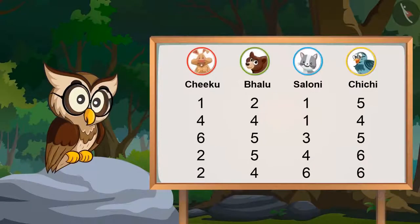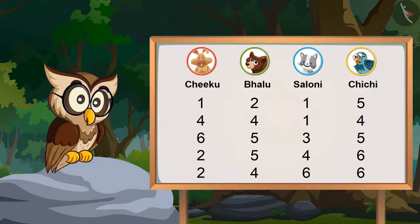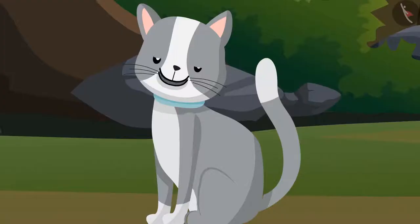Now we have made a list of the numbers that you all got by rolling the dice. So children, in this way I have collected all the points you got by rolling the dice. This kind of information is also known as data. Can you give one more example of data?